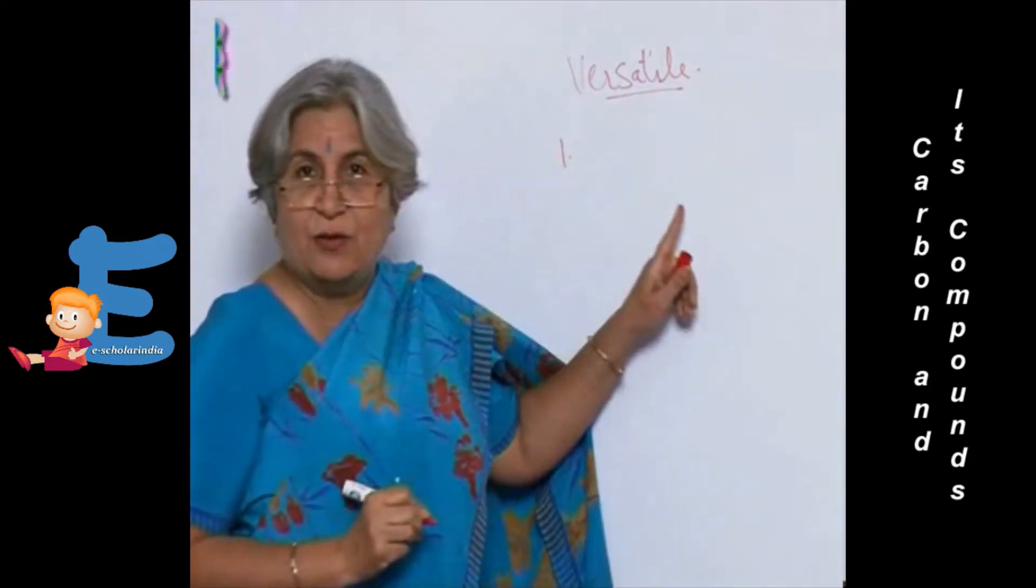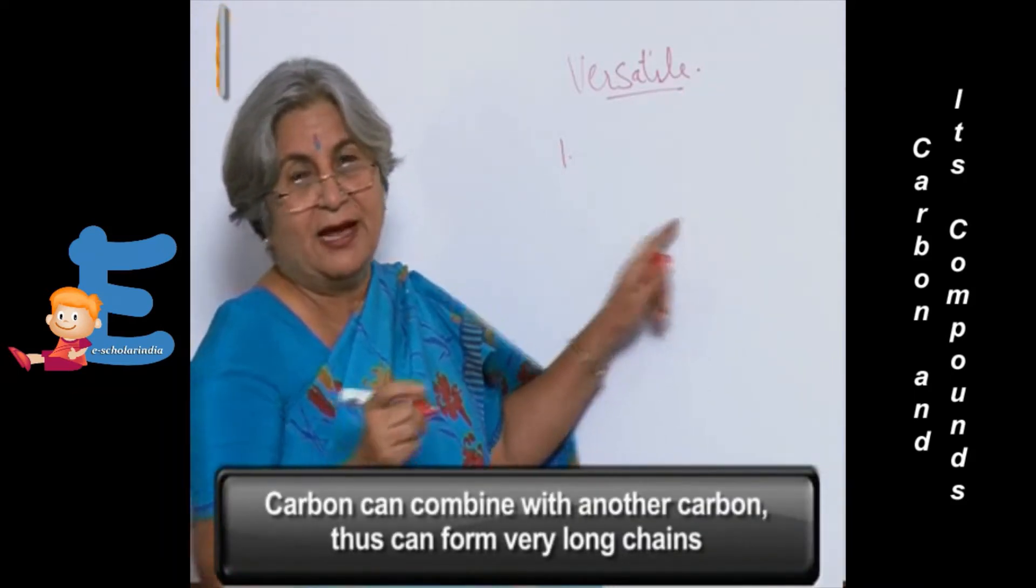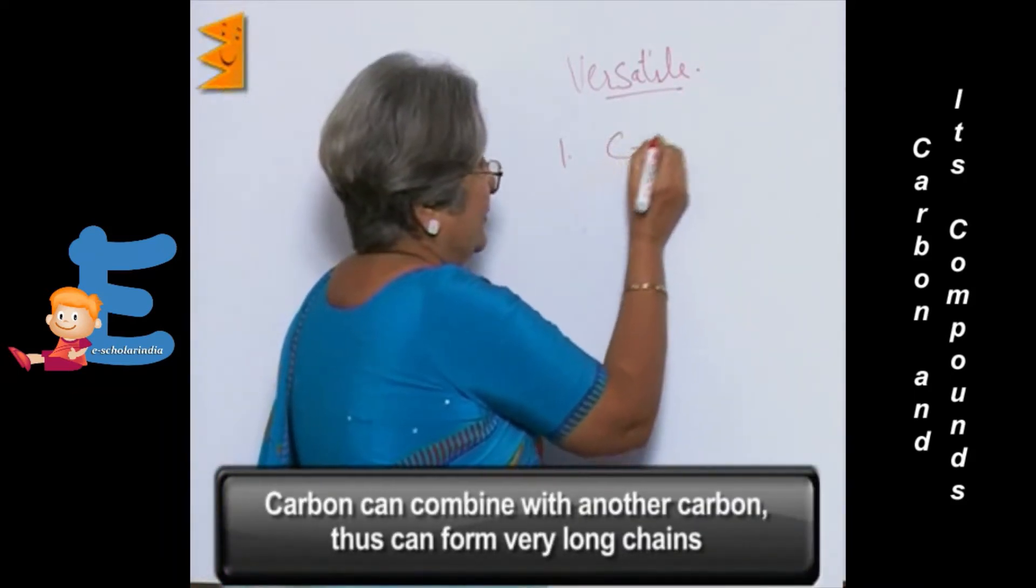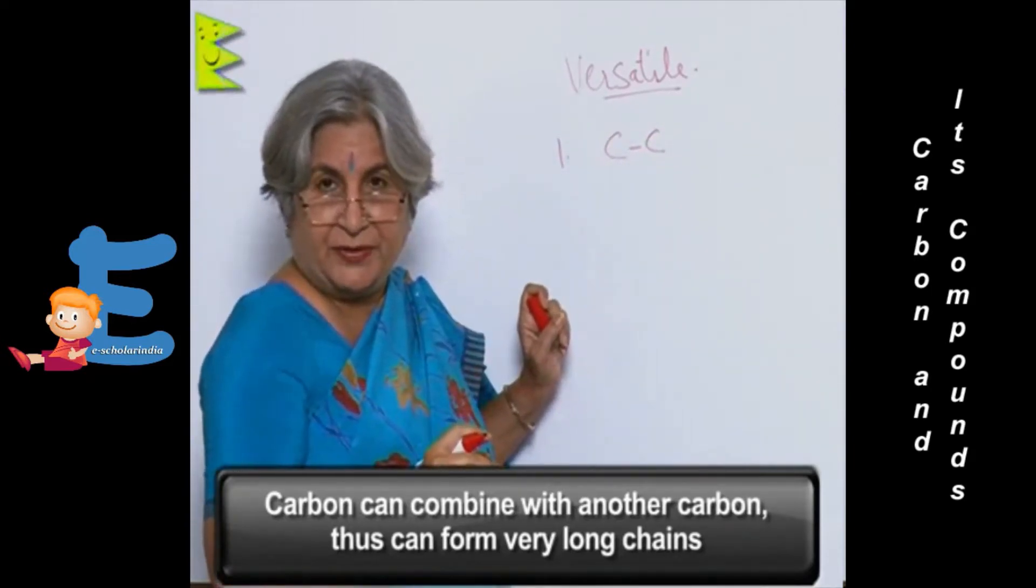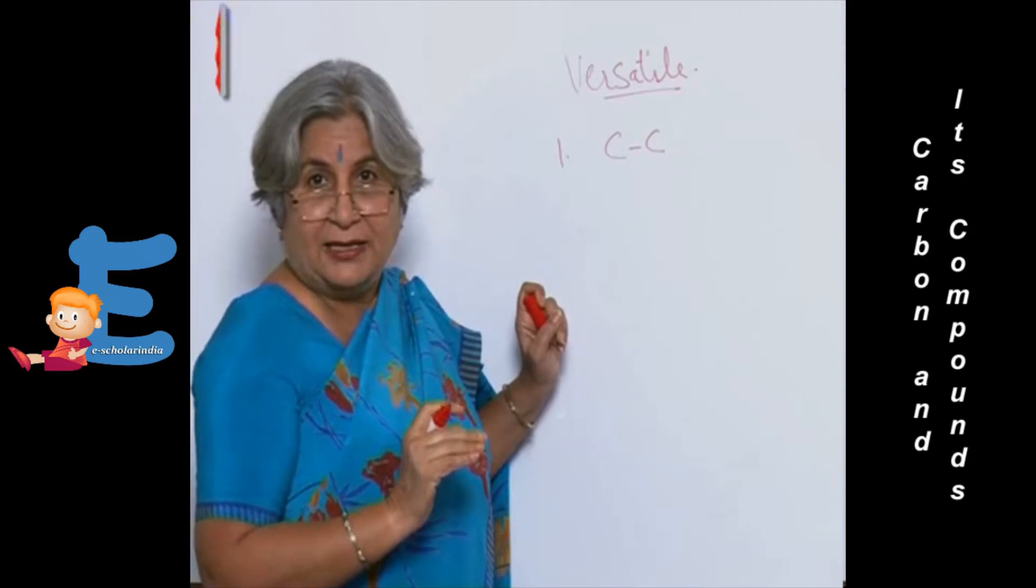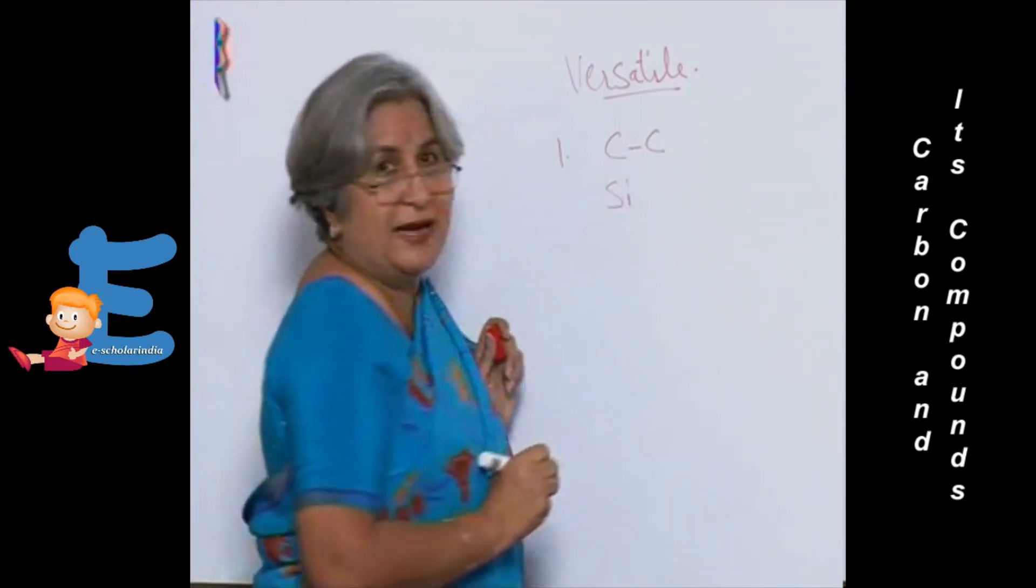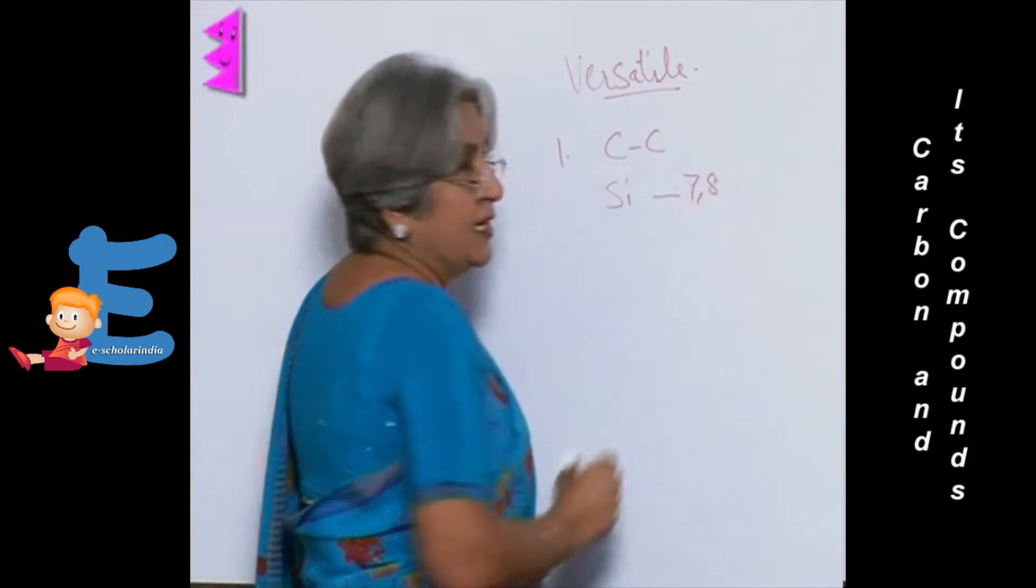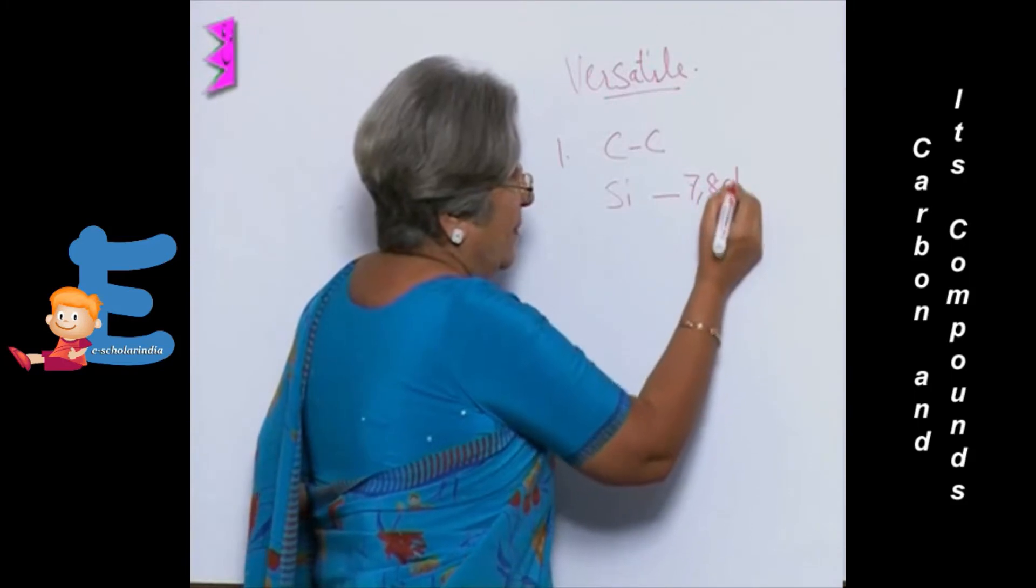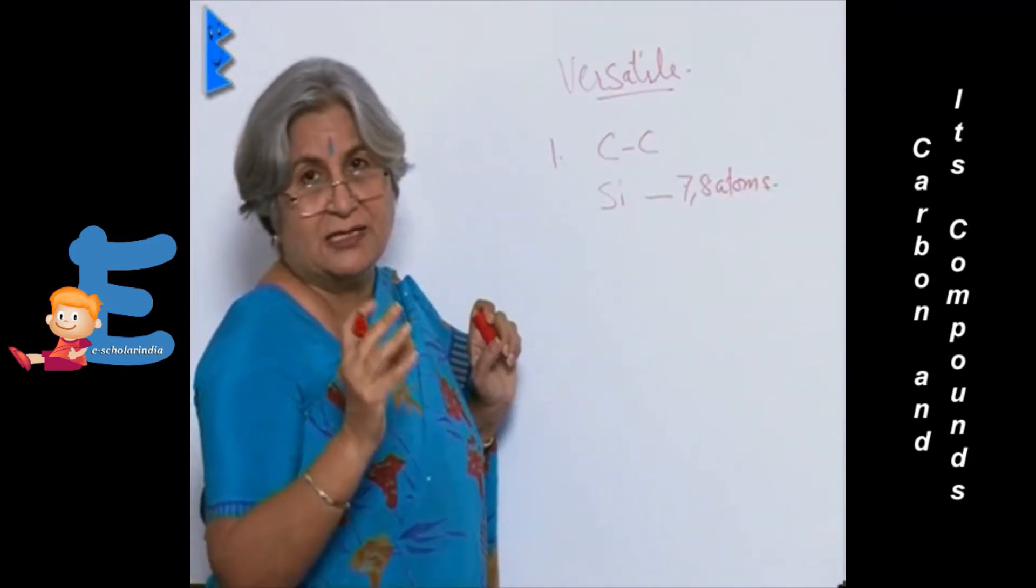First thing is that carbon is the only element that can combine with another carbon and thus form very long chains. No other element can do that. Yes, silicon can. Silicon can also combine with hydrogen and form chains of about 7 to 8 atoms. But this chain is very reactive, unstable.